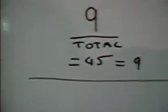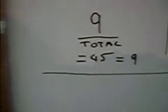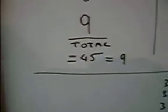Okay, the total of adding all numbers, 1 to 9, equals 45, which equals 9, 4 and 5.